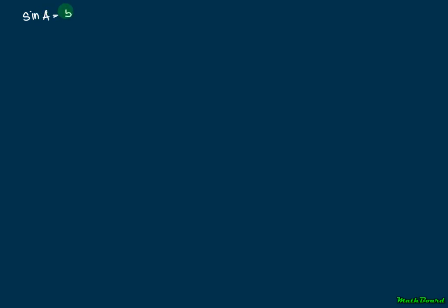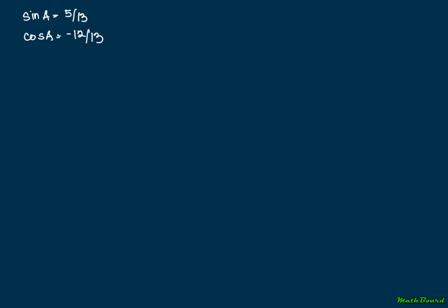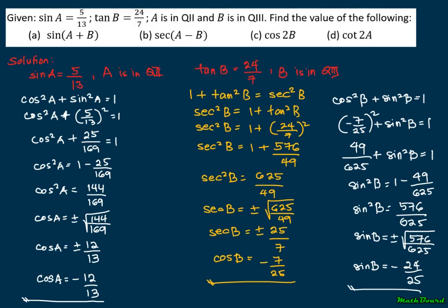So to summarize our values: sine A is 5 over 13, cosine A is negative 12 over 13, sine B is negative 24 over 25, and cosine B is negative 7 over 25. Now we solve for part (a): sine of (A plus B).